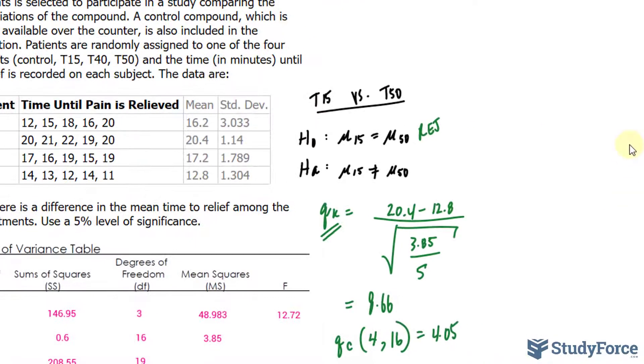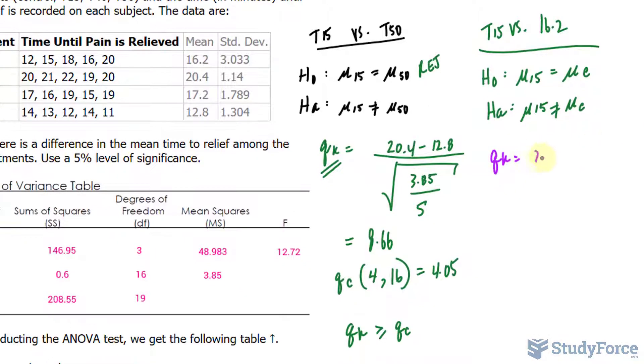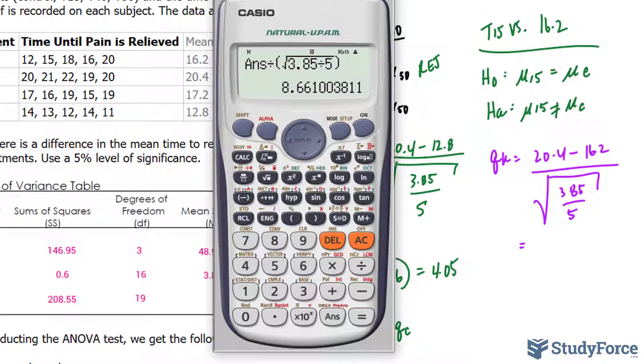We have to recreate the null and alternative hypothesis. The Qₖ value will change. This time we have 20.4 minus the mean of 16.2 over the mean square within, 3.85 over 5. If you calculate this correctly, you should end up with approximately 4.8 or 4.78.